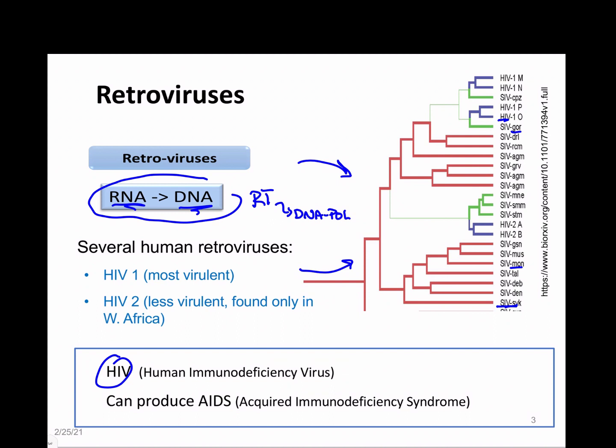There are actually two different forms of HIV. HIV-1 is the most common form and has spread throughout the world because it's the most virulent. HIV-2 is not as virulent and hasn't spread from the area where it first jumped from other primates to humans. When we're talking about HIV, we're referring to HIV-1.